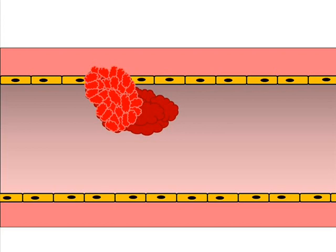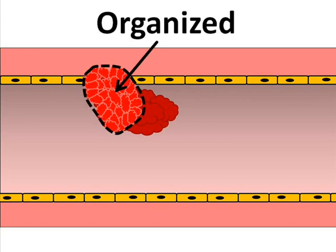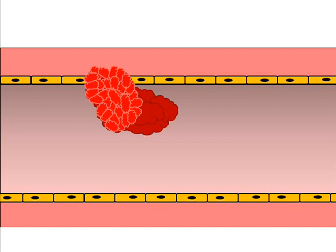Parts of the thrombus where the invasion of granulation tissue is well established are said to be organized. Once an area of thrombus is organized, that area will not be susceptible to dissolution by fibrinolysis. But complete organization may take a matter of weeks, and while one part of the thrombus may be organizing, other parts may be dissolving.